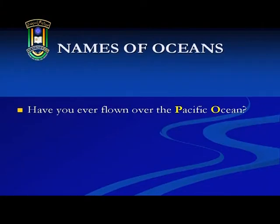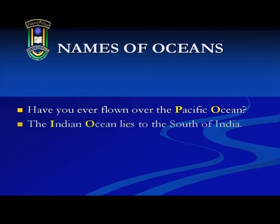Shall we now look at how capital letters are used to indicate names of oceans? Suppose you were to ask: have you ever flown over the Pacific Ocean? — you would capitalize P and O. Or perhaps you want to say: the Indian Ocean lies to the south of India. In both cases, you will be using capital letters to indicate the names of oceans. There is no need to get confused — there are only four oceans. Pacific Ocean, Indian Ocean, Arctic Ocean and Antarctic Ocean will all need to be capitalized.